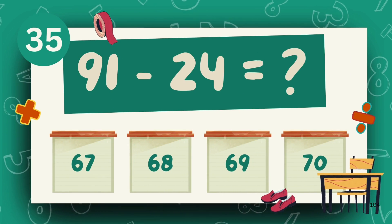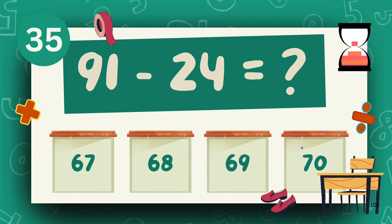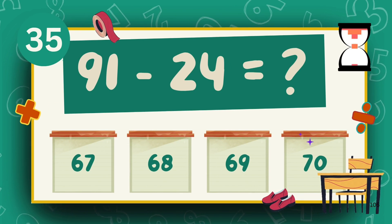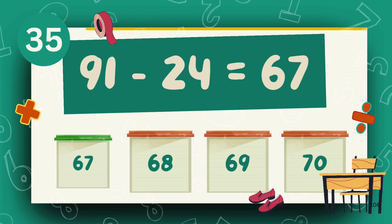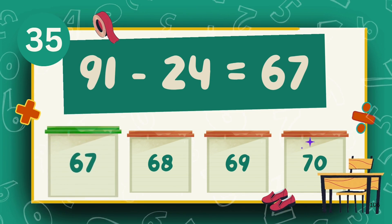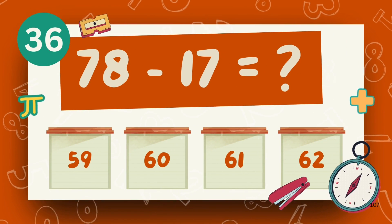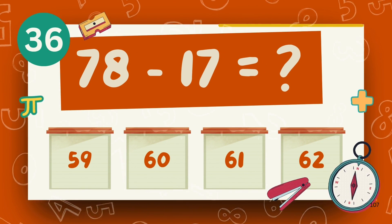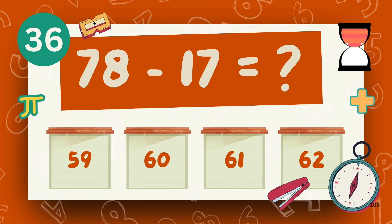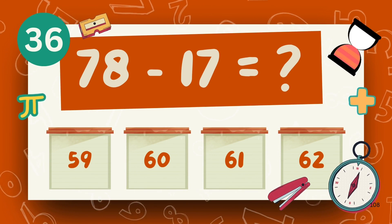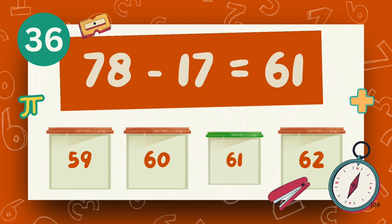What is 91 minus 24? The answer is 64. What is 78 minus 17? The answer is 61.